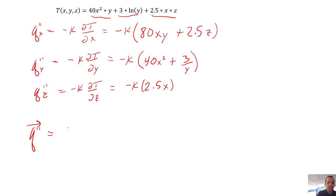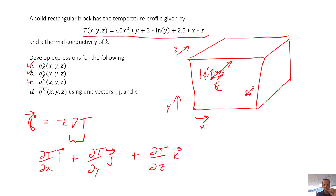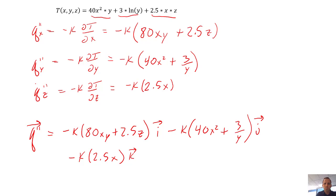So here we have minus k times 80xy plus 2.5 times z multiplied by the i unit vector. We have minus k times 40x² plus 3 over y in the j direction. And then finally we have minus k times 2.5x in the k direction. So that is how we take a temperature profile of a three-dimensional solid, and knowing the thermal conductivity of that solid, we can also figure out how flux is varying, both in terms of direction and magnitude.